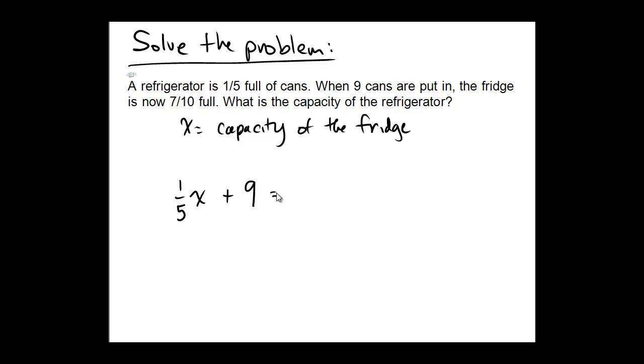And now, it is seven-tenths full. It doesn't have seven-tenths of a can in there. It's seven-tenths of capacity filled. So we get an equation that says one-fifth x plus nine equals seven-tenths x.